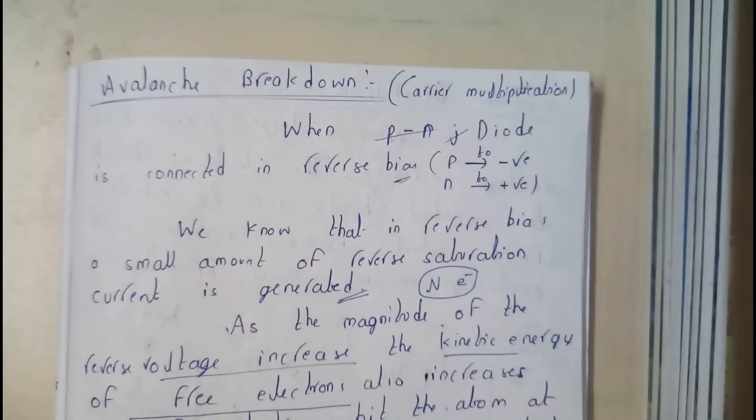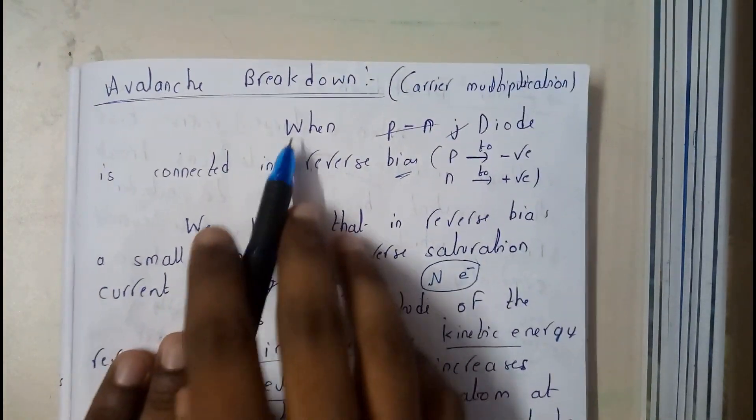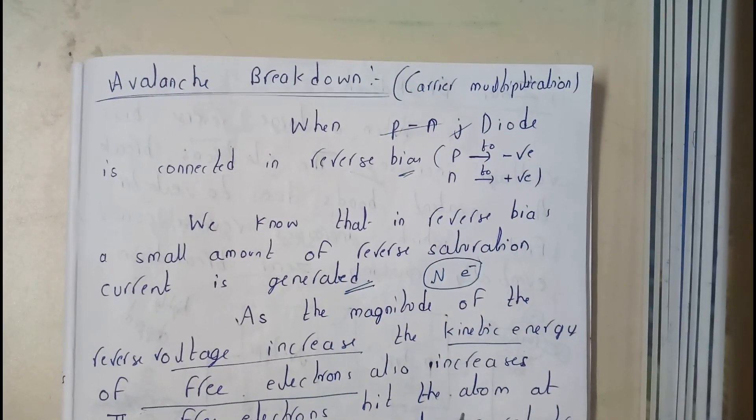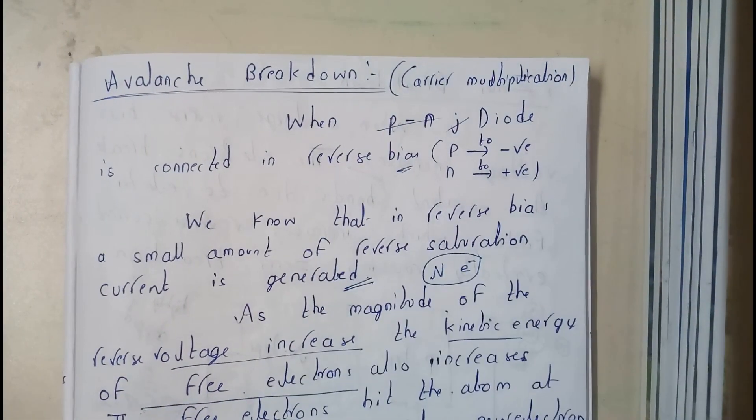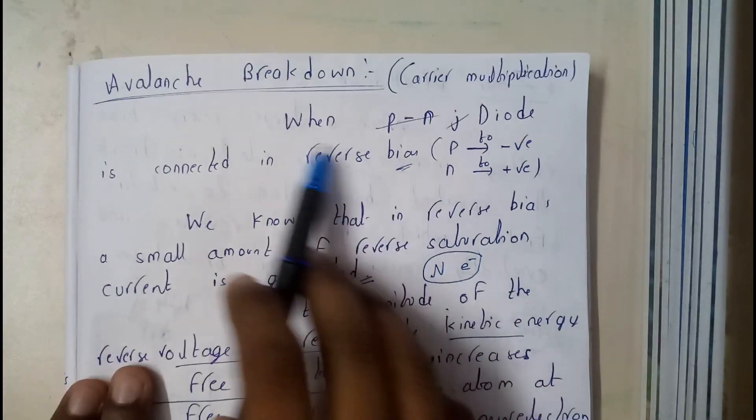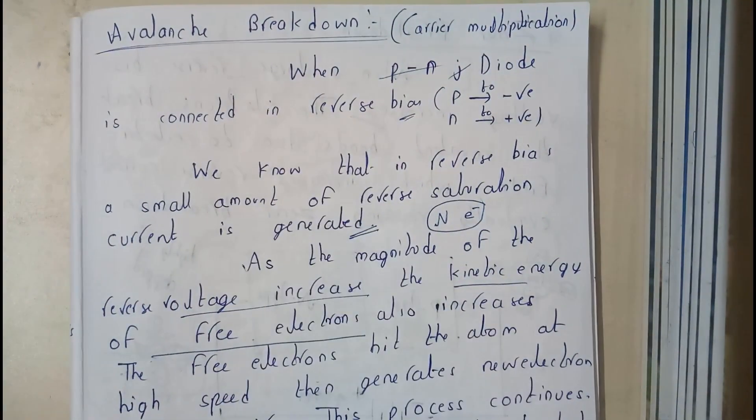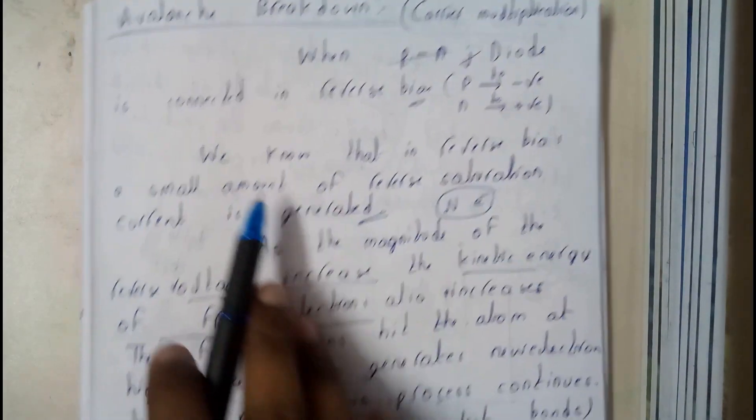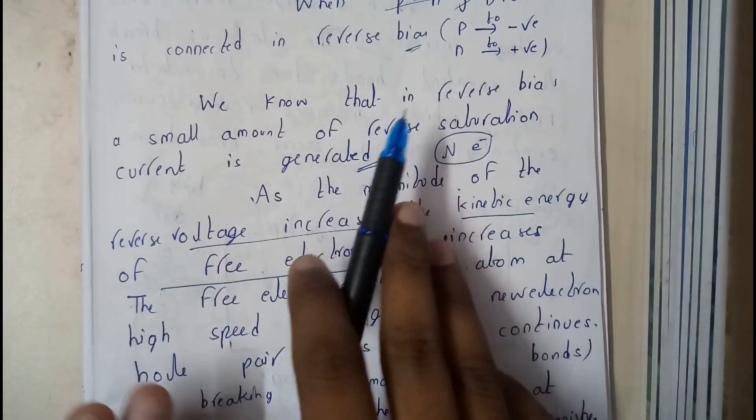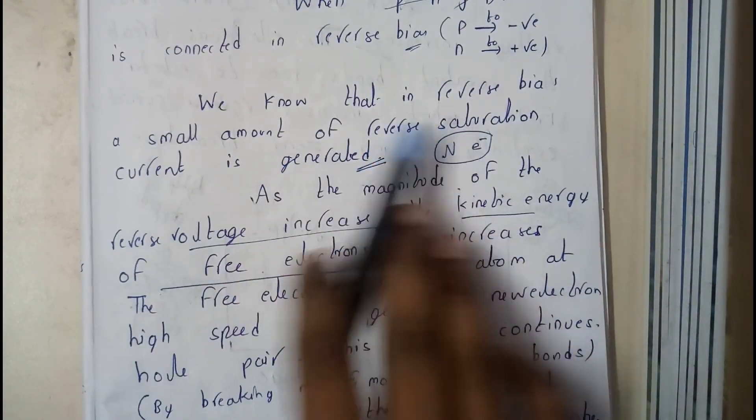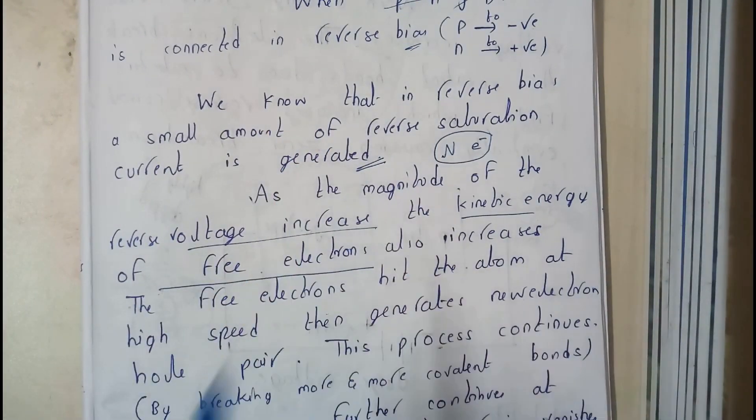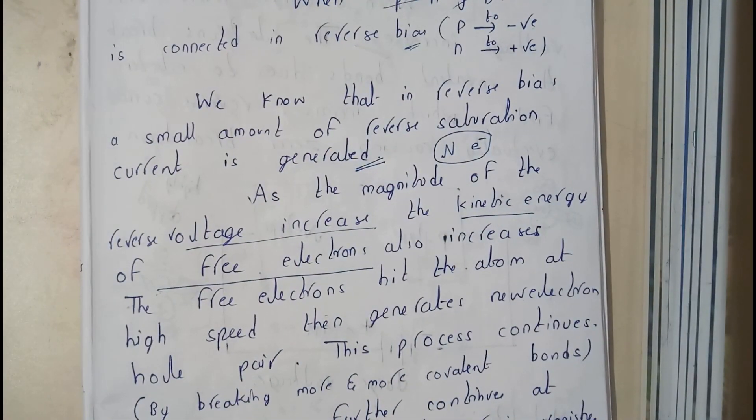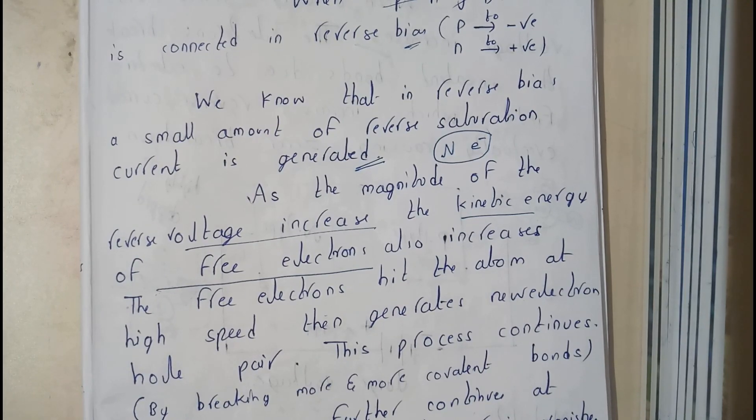Now let us go through Avalanche breakdown. This is also similar to that but here it happens in steps. Basically, Avalanche breakdown is also called carrier multiplier, like its nickname. When a PN junction diode is connected in reverse bias, that is P to negative and N to positive, we know that a small amount of reverse saturation current is generated.